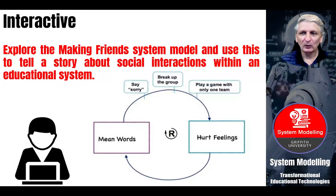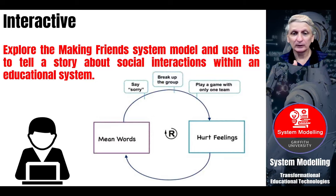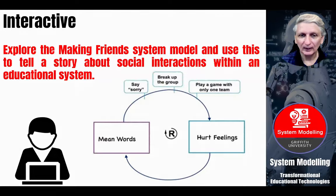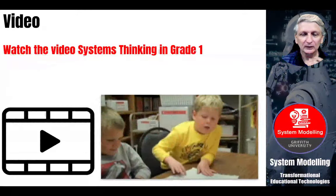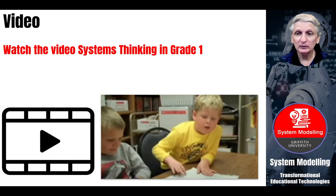We can look at how it can impact upon social interactions, such as if we use mean words to our friends — that may result in hurt feelings. There can be various interactions and effects that we can explore as a result of that. Have a look at the little video clip that shows how young children can explore relatively complex systems through the use of systems modelling.